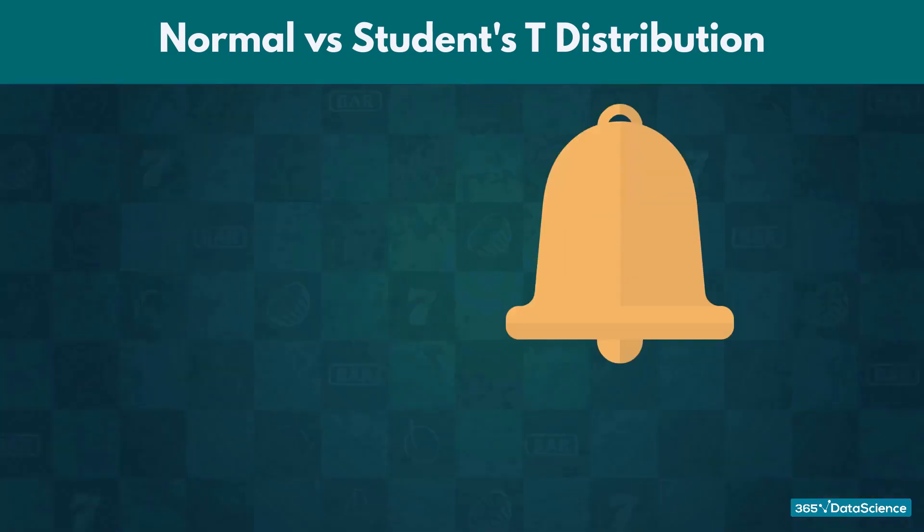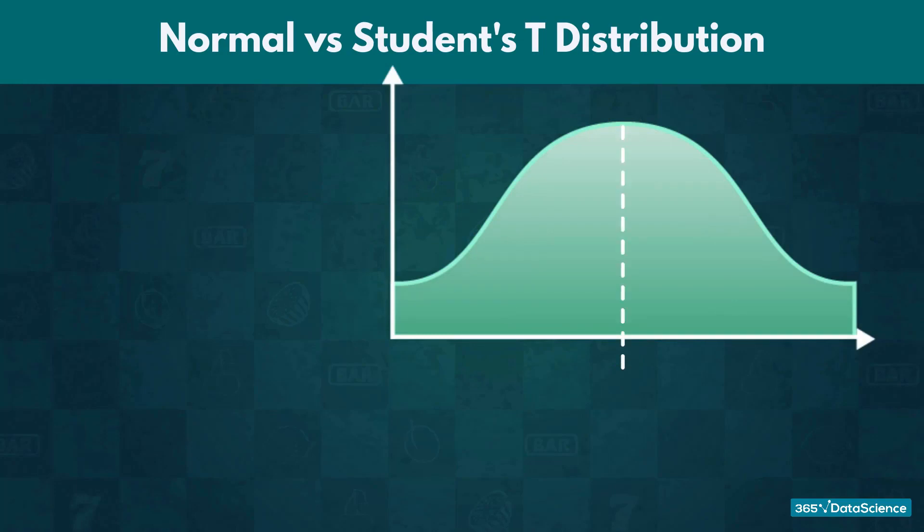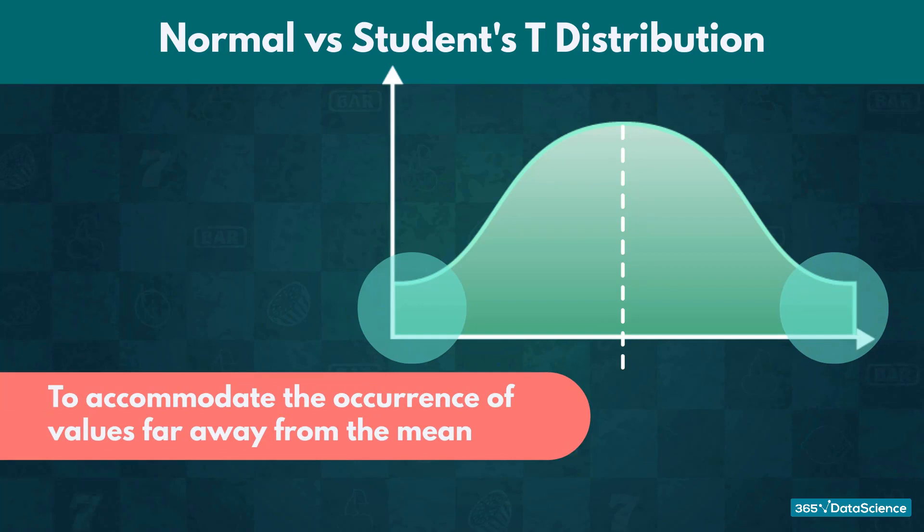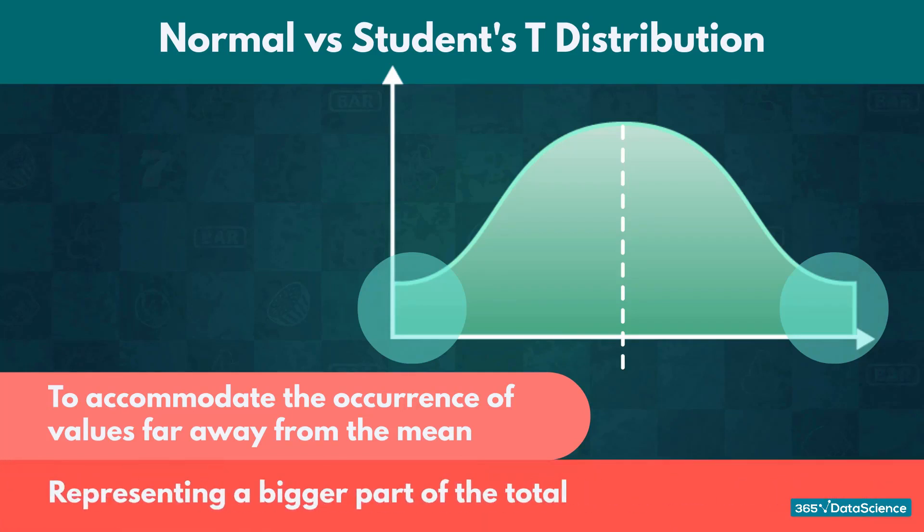Now, the curve of the student's t-distribution is also bell-shaped and symmetric. However, it has fatter tails to accommodate the occurrence of values far away from the mean. That is because if such a value features in our limited data, it would be representing a bigger part of the total.